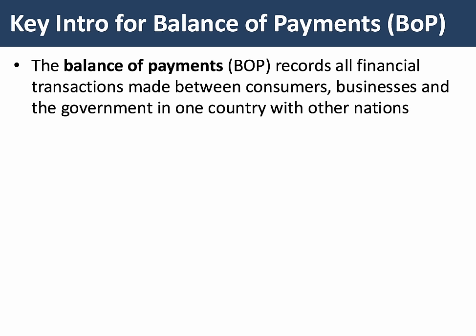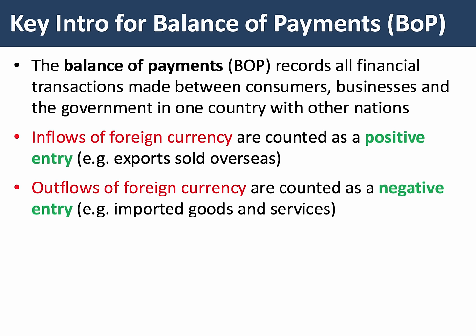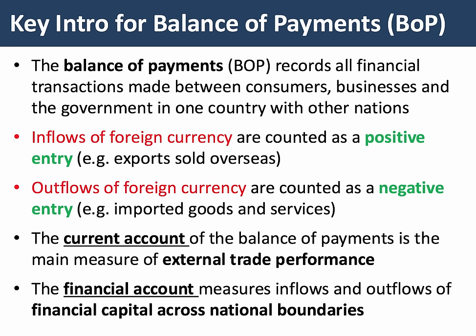The balance of payments, or BOP for short, is simply a financial record. Inflows of foreign currency are counted as a positive entry — for example, if the UK sells oil overseas, that's an inflow of currency. Outflows of currency are counted as a negative entry, for example imports or capital outflows. At A2, we need to make a distinction between the current account and the financial account of the balance of payments.